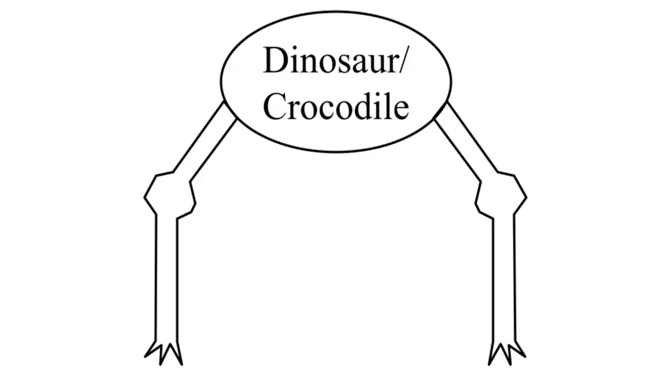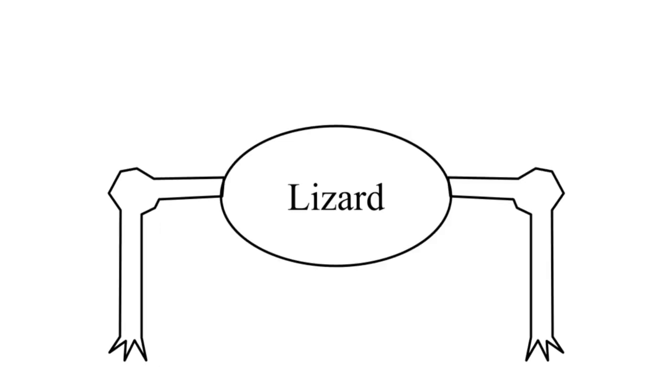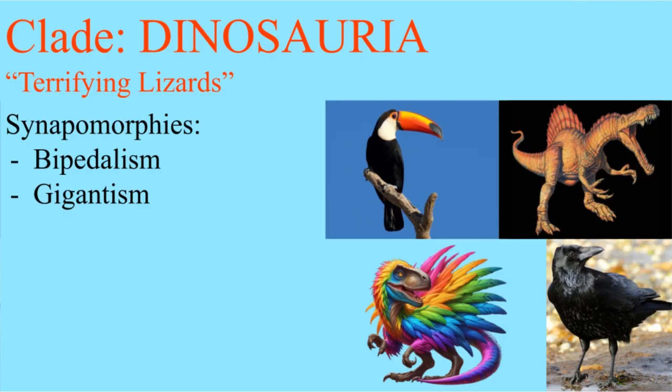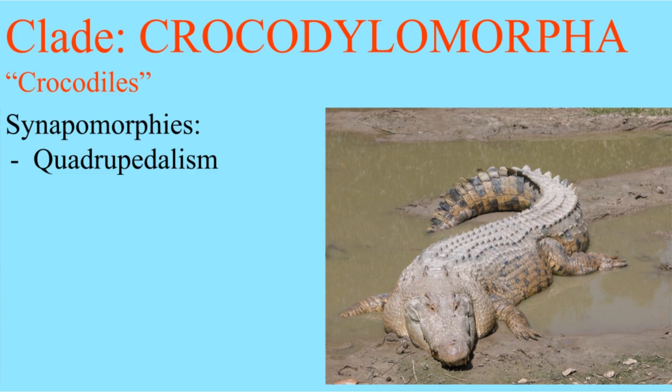Anyway, archosauromorphs have legs that go like this, and the lepidosauromorphs have legs that go like this. Archosaurs have two extra pairs of holes in front of the eyes and on the jaw. The turtles have no holes at all. The archosaurs split into birds, which walk on two legs, and the crocodiles, which don't.